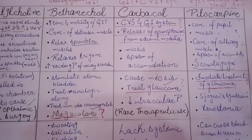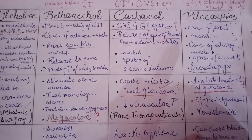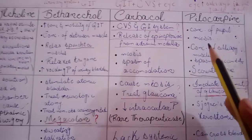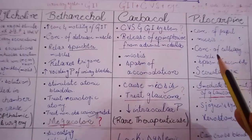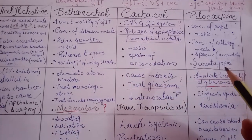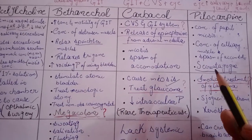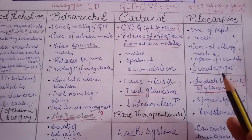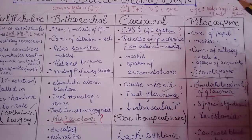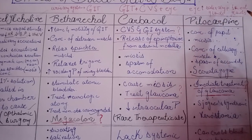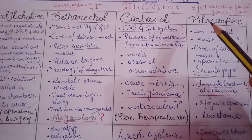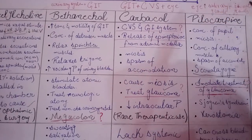Now moving towards the last drug of our topic, that is pilocarpine. It causes constriction of the pupil, it causes miosis, it causes contraction of ciliary muscle, and just like carbachol it causes spasm of accommodation. However, here the function is different — it acts as a secretagogue. It acts as a stimulator of secretion from the salivary glands and sweat glands. Its effects are on the eye, salivary glands, and sweat glands.